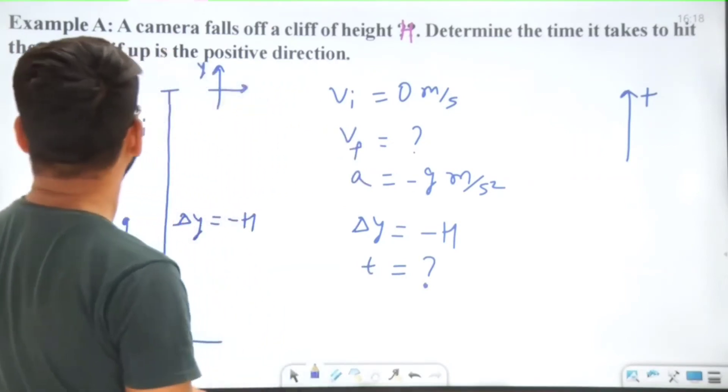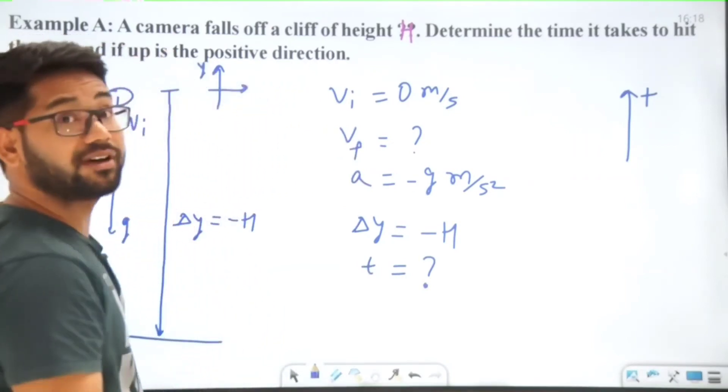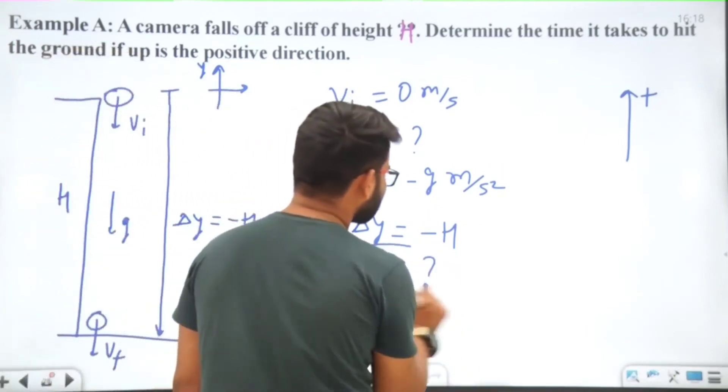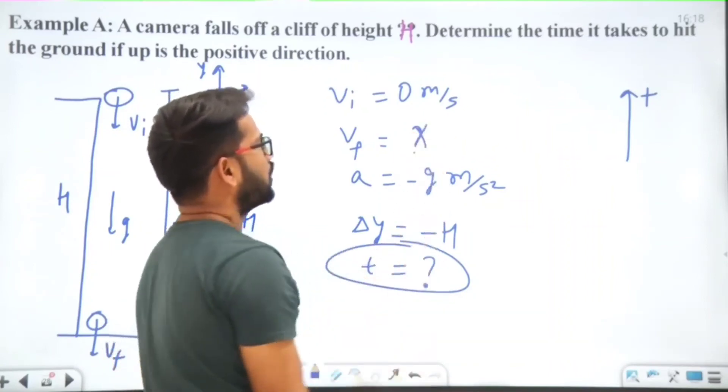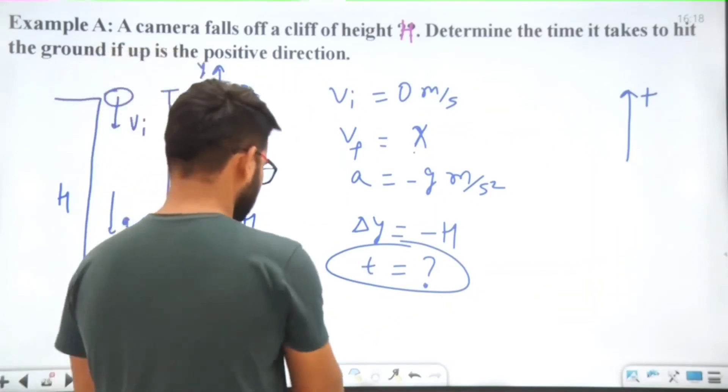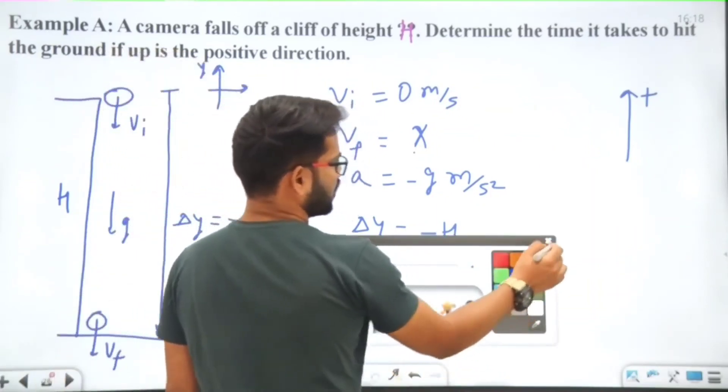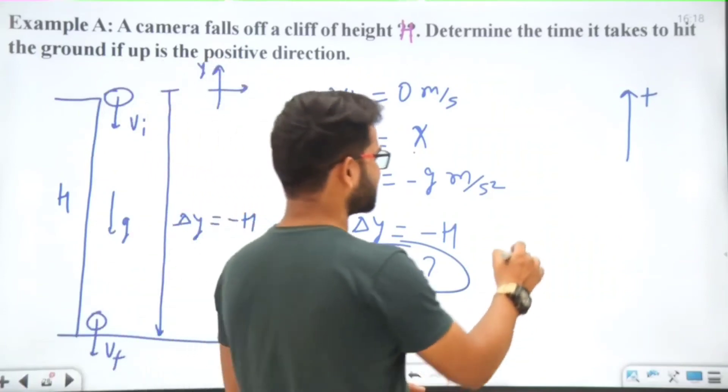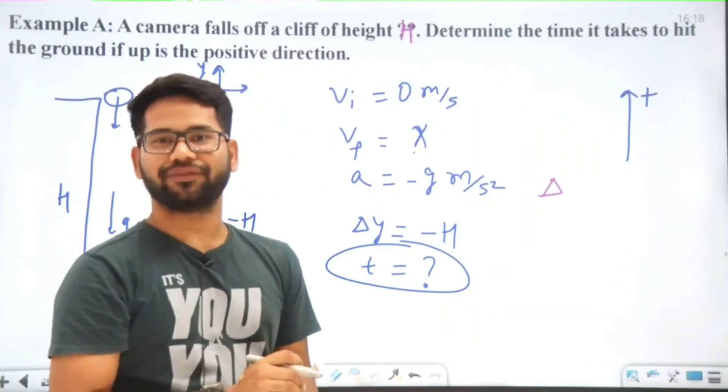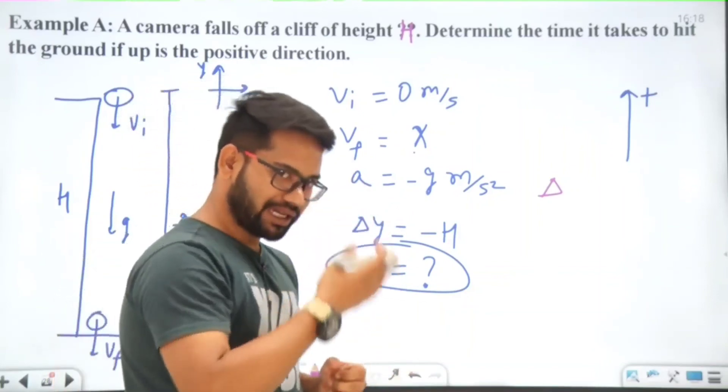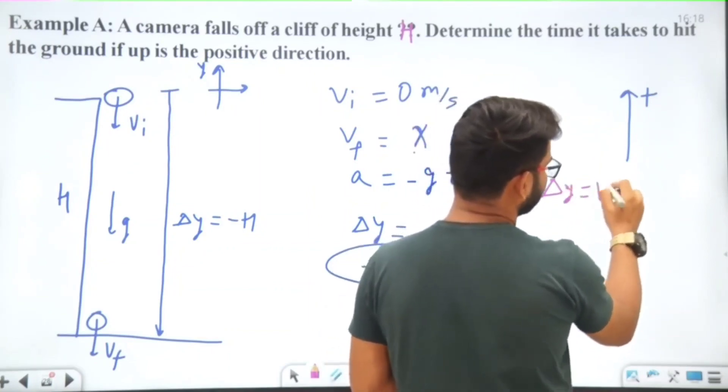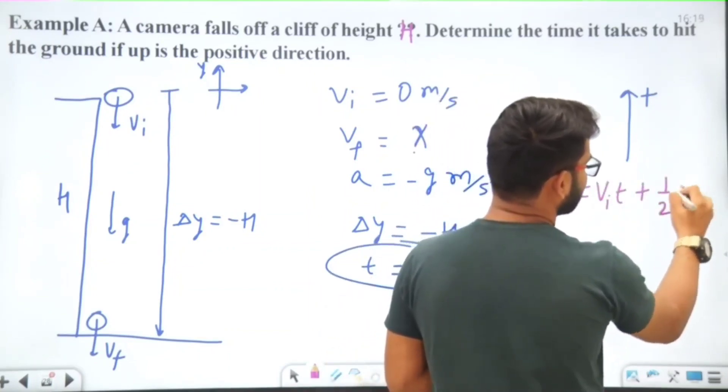We have to apply the no-final-velocity equation. That means Delta X equals VIT plus half AT squared. Here for vertical direction, we are going to write Delta Y equals VIT plus half AT squared.